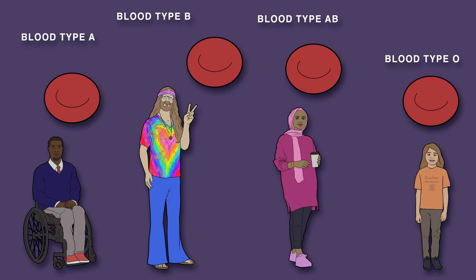Humans have one of four combinations of antigens, along with a corresponding combination of antibodies. People with blood type A have antigen A, people with blood type B have antigen B, people with blood type AB have both antigen A and antigen B, and people with blood type O have neither antigen.